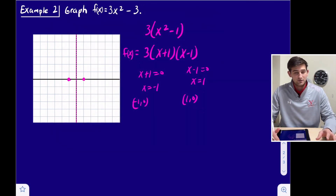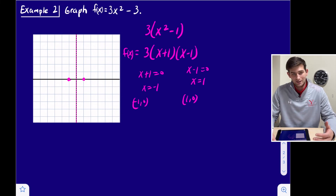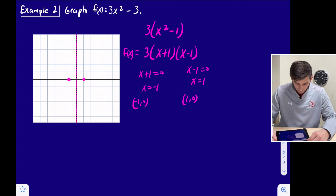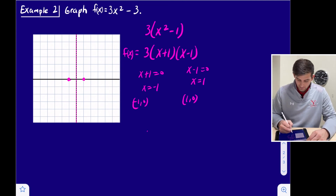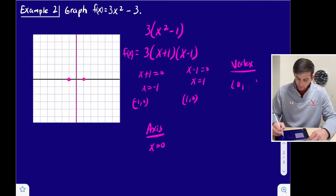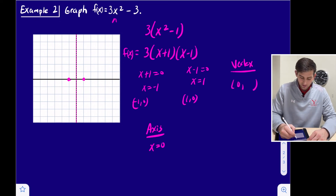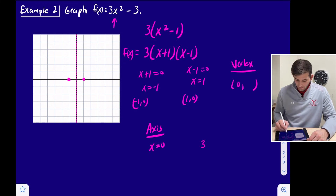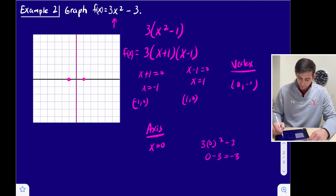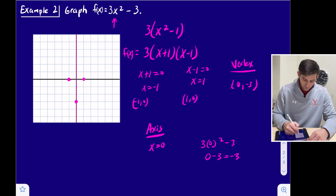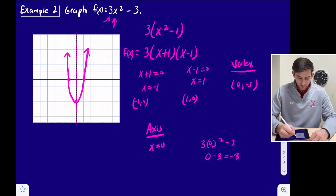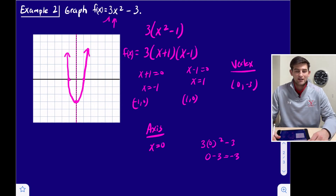If you've seen the previous video on ax² + c, this should make sense because the −3 is just a vertical translation 3 units down. The axis of symmetry we found is x = 0, so our vertex is at (0, something). We plug 0 into the original equation: 3(0)² − 3 = 0 − 3 = −3. So our vertex is at (0, −3). We can now draw our parabola, and we know it opens up because 'a' was 3, a positive number. That's how you graph quadratics in intercept form.